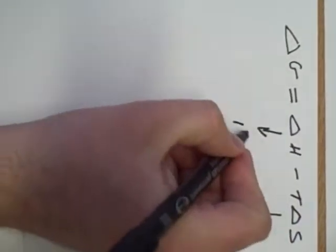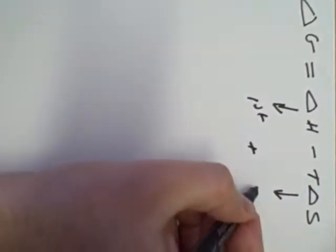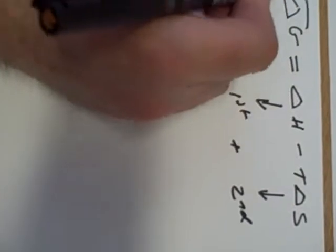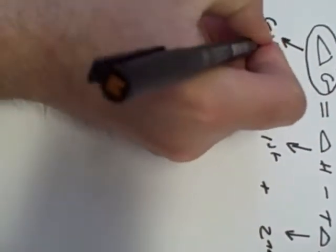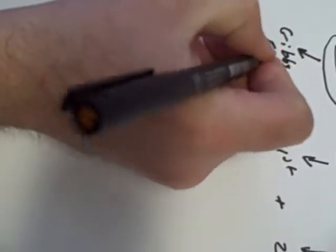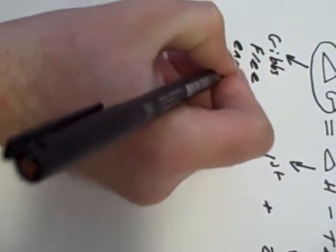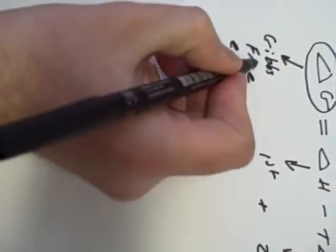Effectively what we do here is take the first and the second laws of thermodynamics and bring them together to get delta G, Gibbs free energy. And by free, I mean energy that is freely available to participate in the reaction.